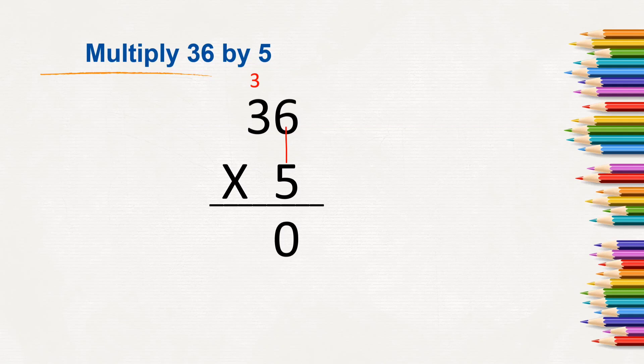And now multiply 5 by 3. What is 5 by 3? 5 times 3 is 15. Add the carried number that is 3, so 15 plus 3 is 18. So here we write 18. When we multiply 36 by 5, we will get the product as 180.